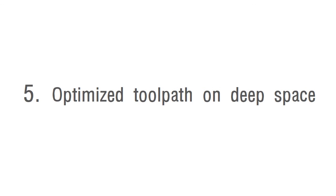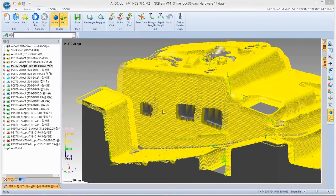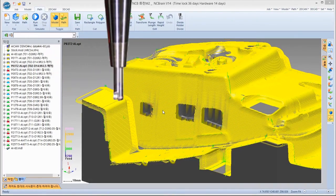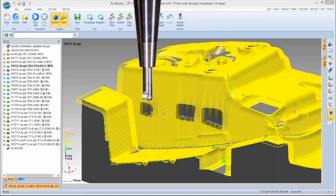Optimize toolpath for deep space with longer tool. In order to machine deep area, it needs to consider a lot of things with experience, but AI Cam can find the area itself. The yellow toolpath shows the area which can be machined with short tool and holder tooling.